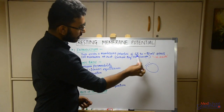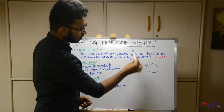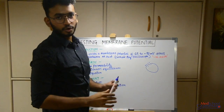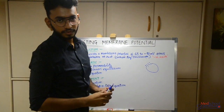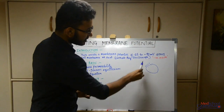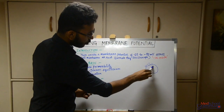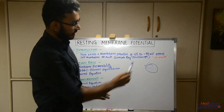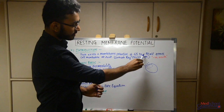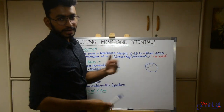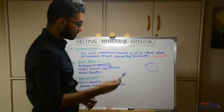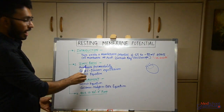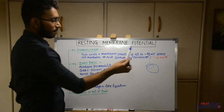Another important thing to notice is that the resting membrane potential is always negative. This means that the inside of the cell is always negative compared to the outside. Why it is negative and how this occurs, we'll talk about in the ionic basis of resting membrane potential.